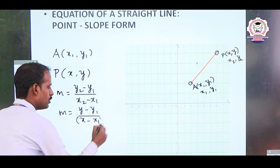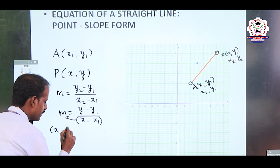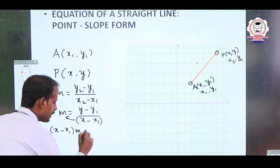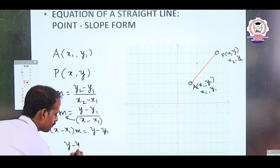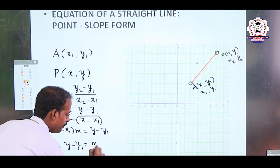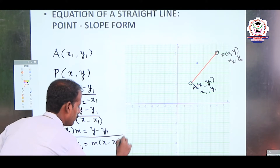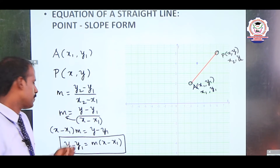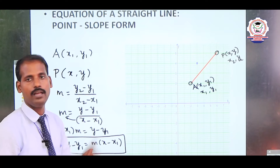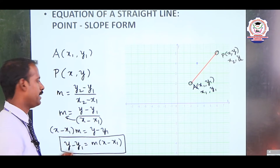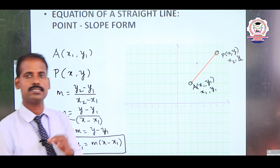The denominator (x - x1) moves to the left-hand side, giving us x minus x1 multiplied by m equals y minus y1. So the required equation of the straight line is: y - y1 = m(x - x1). Given one point and one slope, we use this formula.